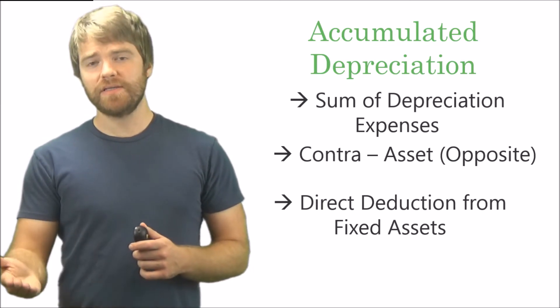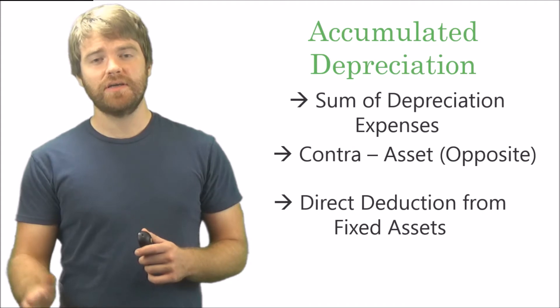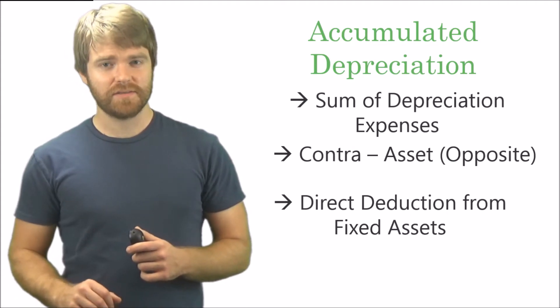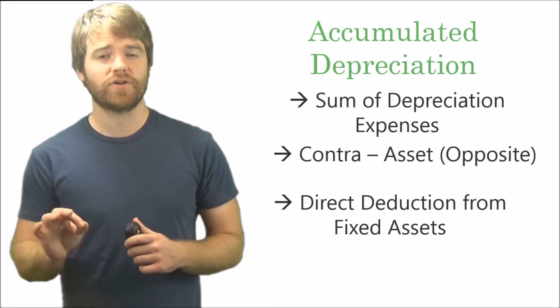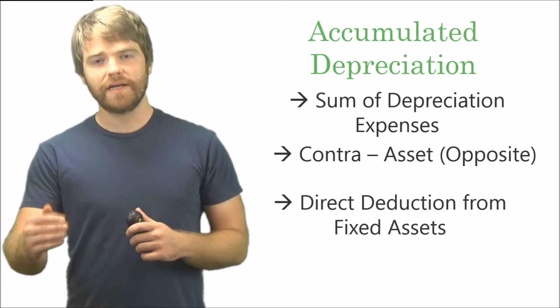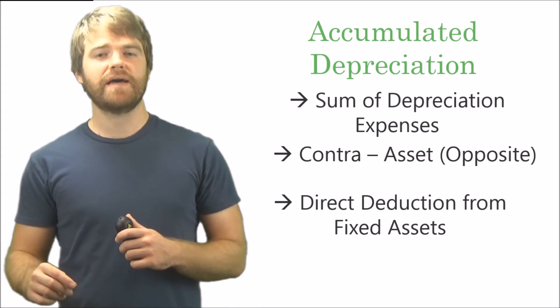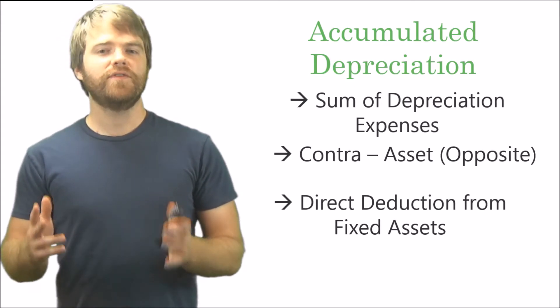So if a fixed asset is going to be a debit when you put it on your balance sheet, that means accumulated depreciation, since it's the opposite, would be a natural credit. So accumulated depreciation is a credit account that directly deducts from your fixed asset and is considered a sum of depreciation expenses.